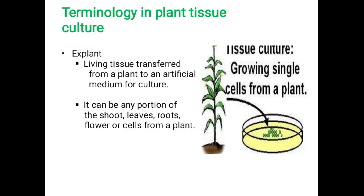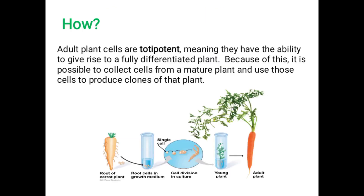Plant tissue culture is possible because plant cells are totipotent, meaning they have the ability to give rise to a fully differentiated plant. Totipotency is the ability of a cell to differentiate into a number of cells and fully grow into a whole plant. Because of this property, we can collect cells from a mature plant and use those cells to produce clones of that plant.